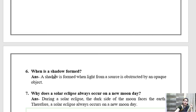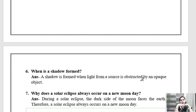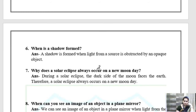Question 6: When is a shadow formed? A shadow is formed when light from a source is obstructed by an opaque object. For a shadow to be formed, we require an opaque object and a source of light. An opaque object is one through which light cannot pass.